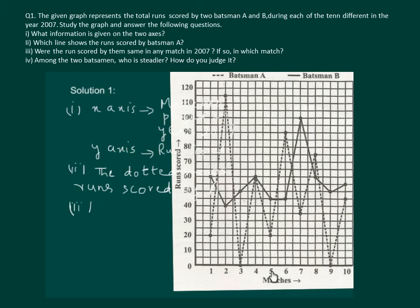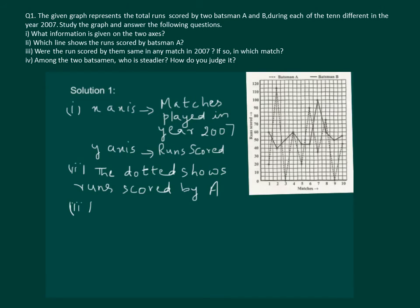We proceed to the fifth, sixth, seventh, eighth, ninth and tenth match. And see that only in the fourth match both of them made 60 runs. Hence our answer is that during the fourth match both made 60 runs.